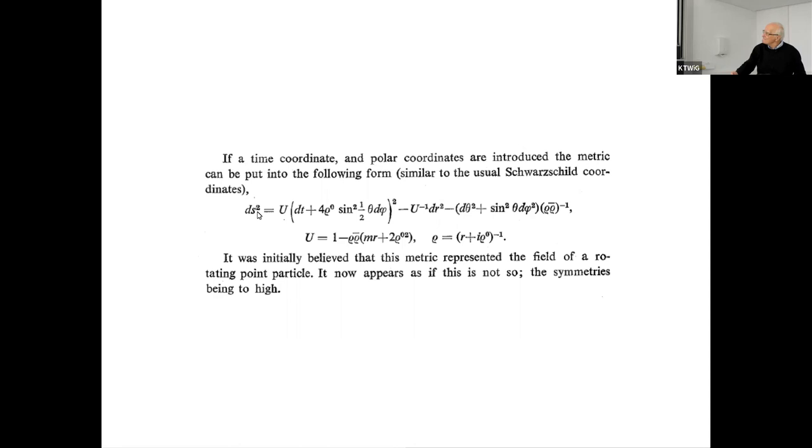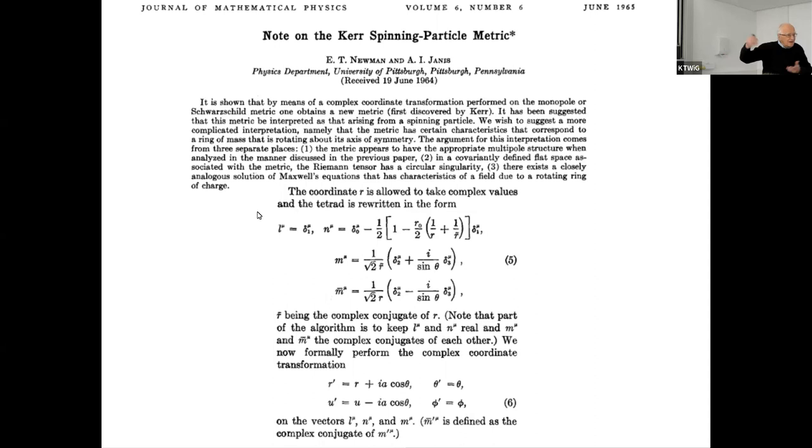Newman and his students generalized this procedure to find and derive the Kerr metric by this complex coordinate transformation, where r is the standard radial coordinate and u is the null coordinate in the Schwarzschild metric. a is the Kerr parameter. It can be done starting from the Schwarzschild metric to get the Kerr, but also, very quickly, Newman and his students, starting with Reissner-Nordström metric, derived what is now known as the Kerr-Newman metric, which contains a rotating charged black hole.